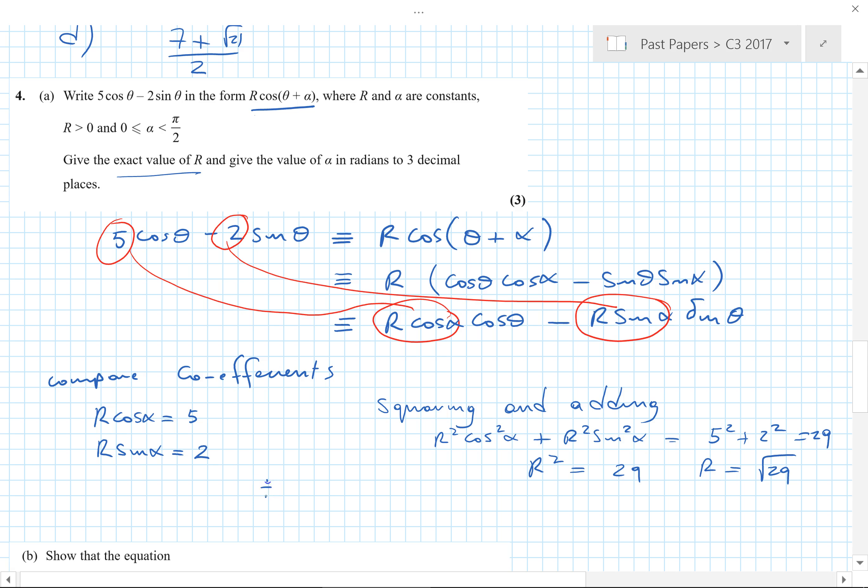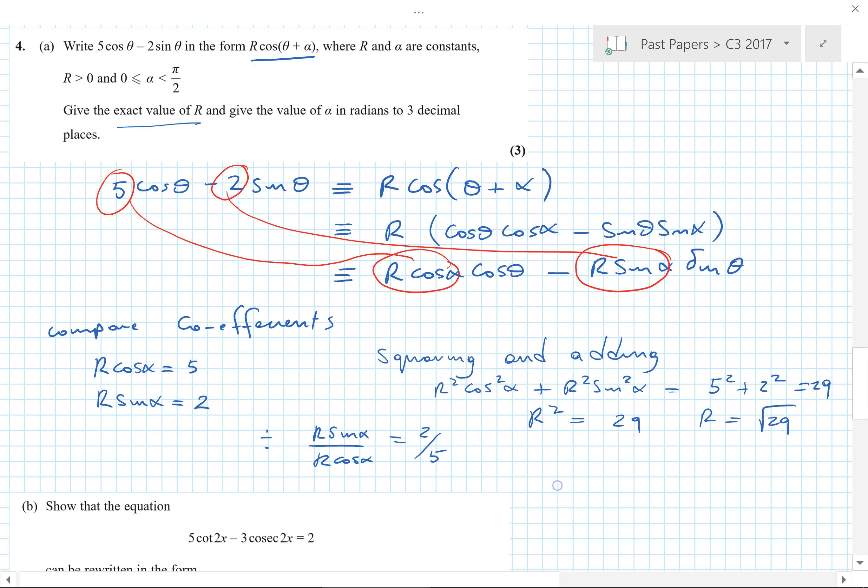Now if we divide to find the other one, we can divide and we get r sine alpha over r cosine alpha is equal to 2 over 5. So it gives me tan alpha equals 2 over 5. So if I look at the inverse tan of that, we get that and it wants three decimal places, so we better give three decimal places, 0.381. That's part i.